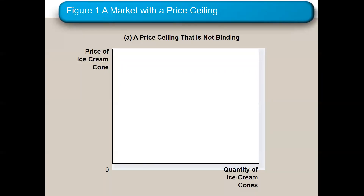I recommend that you take the outline on chapter six off the sheet. If you follow the outline, it makes this a lot easier. The first thing in chapter six is controls on prices.